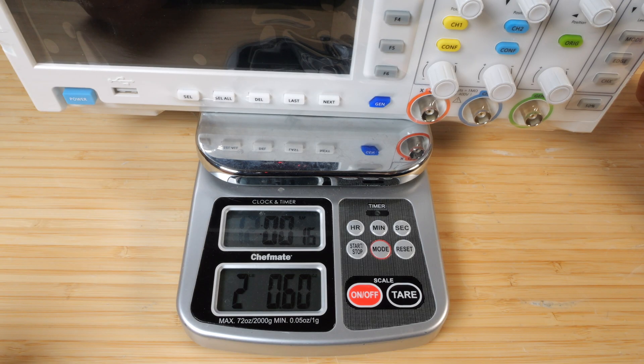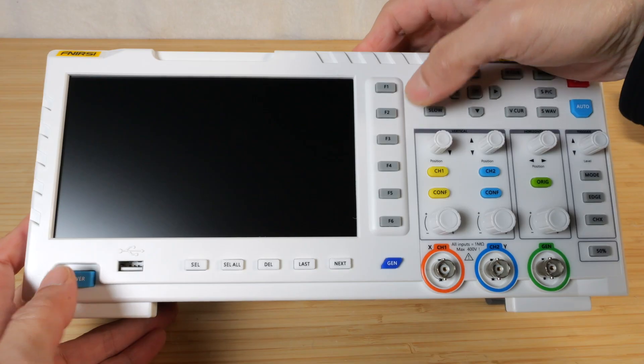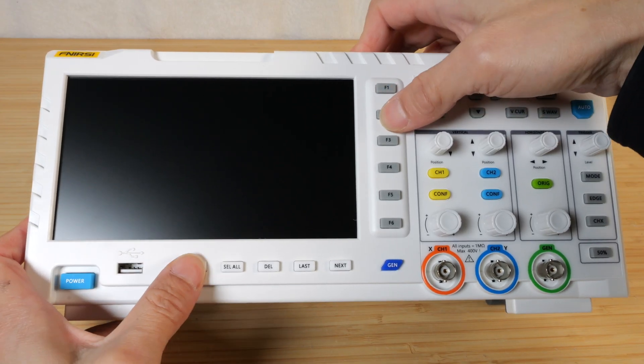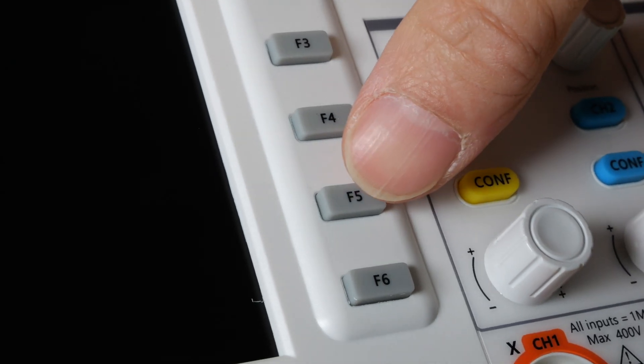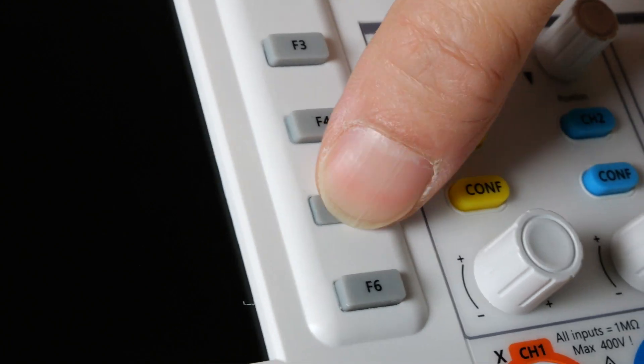The scope by itself weighs 2 pounds 0.6 ounces. So all of these power buttons and function buttons are rubber dies. When you press on them, there's a crisp tactile feeling that you did press them.